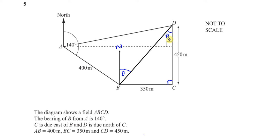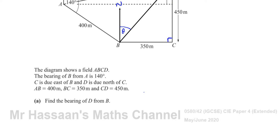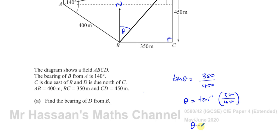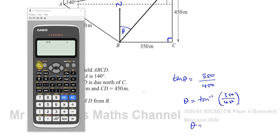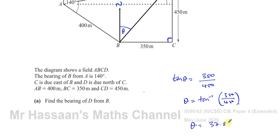Using right-angle triangle trigonometry, tan of theta equals opposite over adjacent, so tan(θ) = 350 over 450. Therefore theta equals the inverse tan of 350 divided by 450, which gives 37.875 degrees. That's the angle theta.